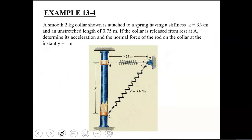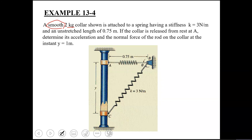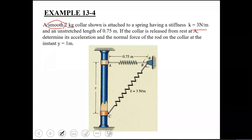Moving on to Example 13-4: you have a smooth collar with a mass of 2 kg. The word 'smooth' indicates you don't have to include friction in your analysis. This smooth collar is attached to a spring having a stiffness of 3 Newton per meter.